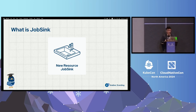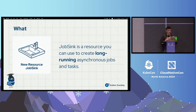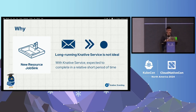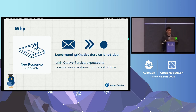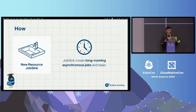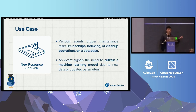Introducing the new resource called job sink. Job sink is a resource that you can use to create a long-running asynchronous job in the background. With the autoscaling from Knative serving, a Knative service will be scaled down after a period of time if it doesn't receive any new traffic — it is designed for stateless and short tasks, not for running really long background jobs. Job sink solves this problem by creating a long-running asynchronous job in the background with every unique event received. Use cases include triggering database backup jobs or rerunning a machine learning model when new data arrives.